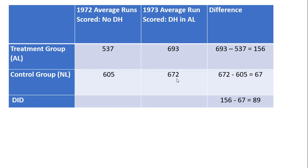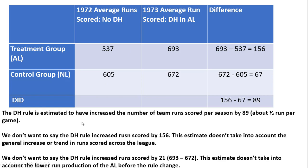Let's get our difference-in-differences estimate. First, we compute 693 minus 537: American League teams scored 156 more runs during the season. National League teams also scored more runs — 67 more. So 156 minus 67 gives us the difference-in-differences: 89 more runs scored as a result of the DH rule. We don't want to say the DH rule increased runs scored by 156, because that estimate doesn't take into account the general increase or trend in runs scored across the league.